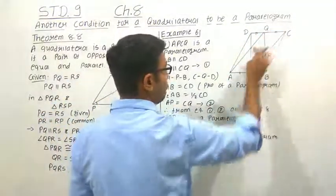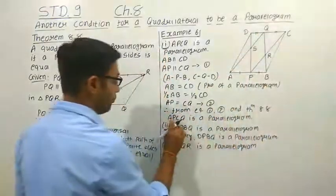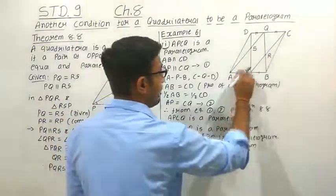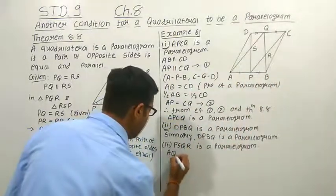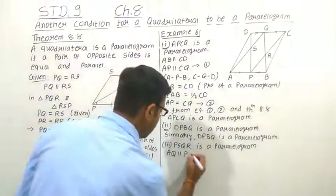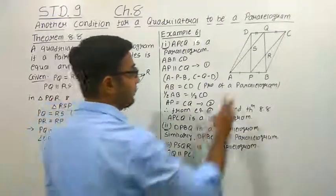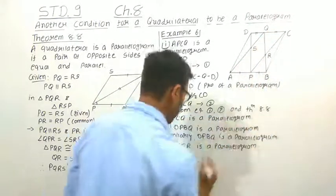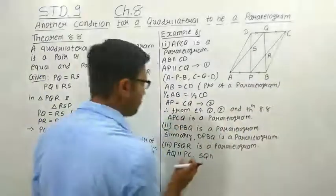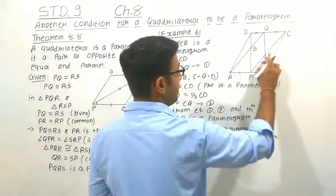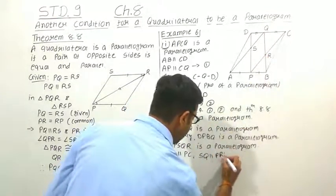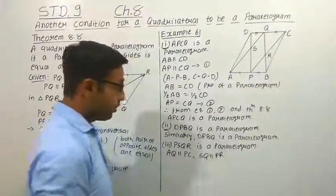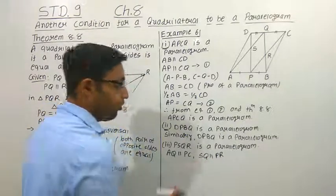Since APCQ is a parallelogram, PC and AQ are also parallel. Both opposite sides of APCQ are parallel, so AQ is parallel to PC. From this, we can take one portion of AQ — that is SQ — and one portion of PC — that is PR. So SQ is parallel to PR, because SQ is part of AQ and PR is part of PC.